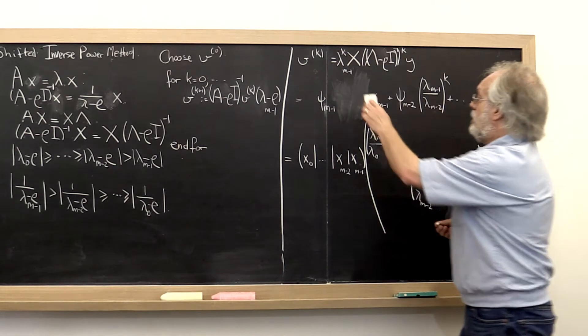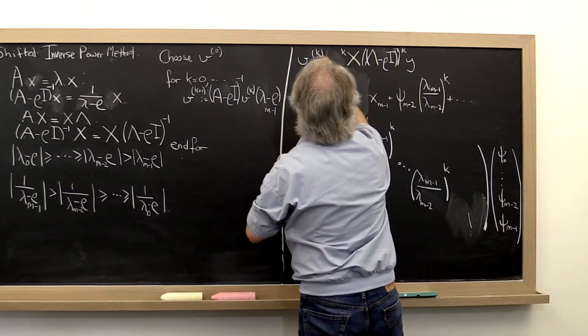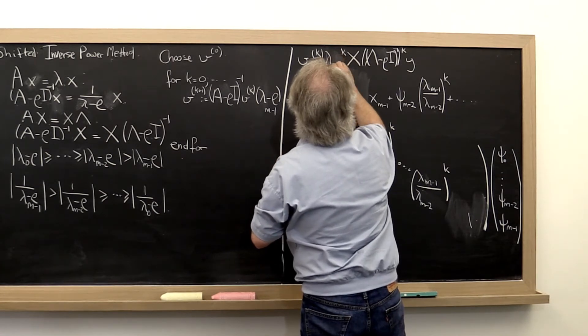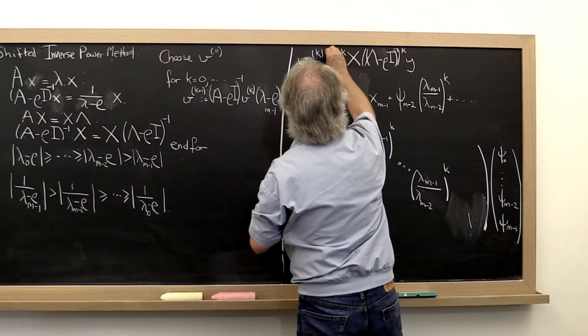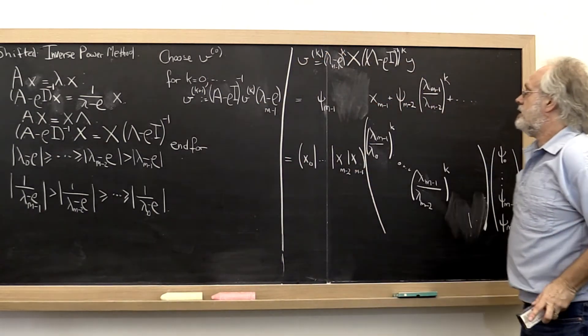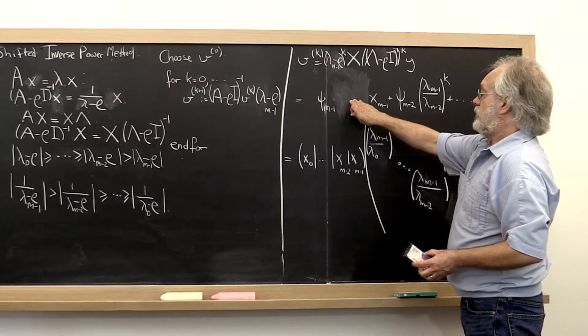And then we would multiply that here by lambda m minus 1 minus rho to the kth power. If this is the version that we're analyzing, then this ratio would still be 1.